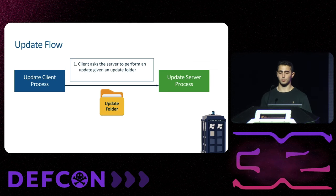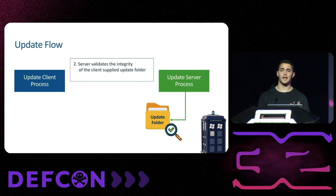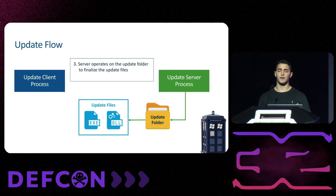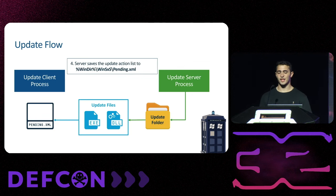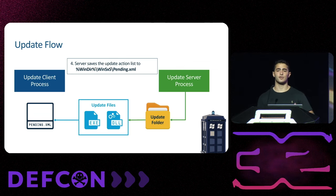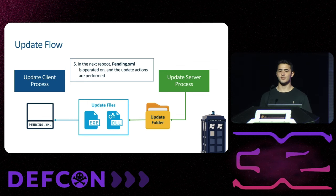Let's look at a simplified flow of the Windows update process. First, the client asks the server to perform an update given an update folder supplied by the client. Second, the server validates the integrity of that folder. Third, the server operates on the folder to finalize the update files, saved to a server-controlled folder not accessible to the client. Fourth, the server saves an action list — named pending.xml — to a server-controlled folder. This action list contains the update actions: source and destination files to update, etc. Finally, when the OS reboots, the action list is processed and update actions are performed.